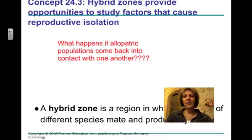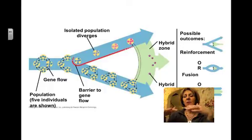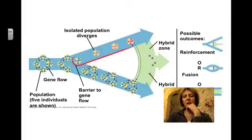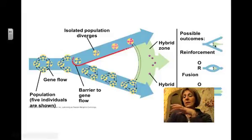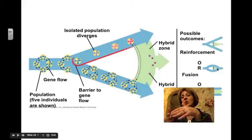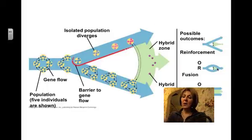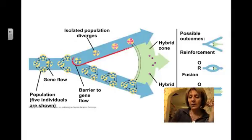What happens if allopatric speciation occurs and then the two populations come back into contact with one another? We call this a hybrid zone, where organisms from different species come into contact and possible hybrids may be produced. There are three different outcomes: you can have reinforcement, where the two different populations continue to diverge due to differences in reproduction; or fusion, where the two hybrids go back to one species; or stability, where you have some hybridization but no further divergence of the population.